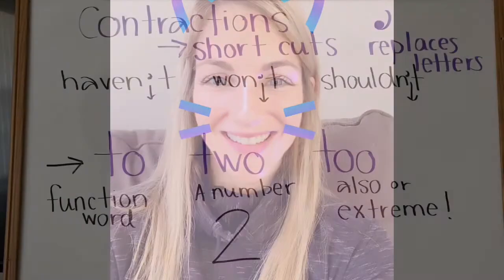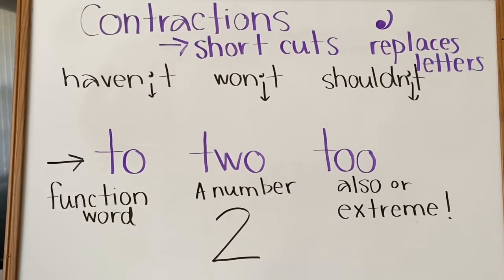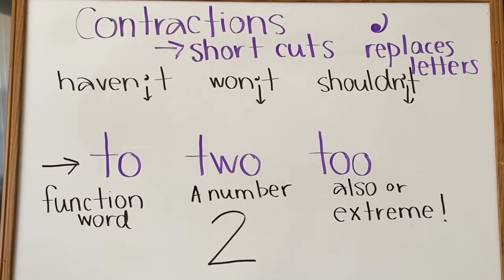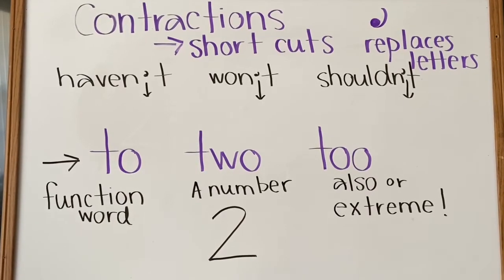Good morning, Grade 2. Let's talk about contractions and homophones. We've been talking all about contractions, so we know that a contraction is a shortcut to say two words. We know that our friend the apostrophe replaces the letters that we don't use.